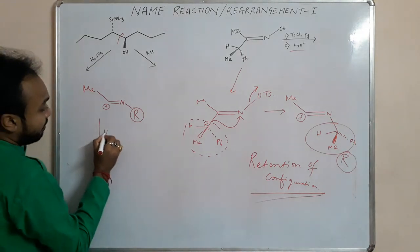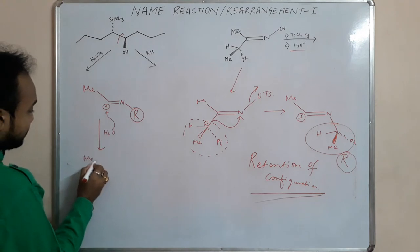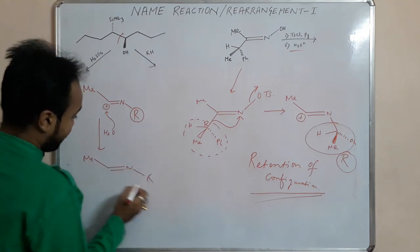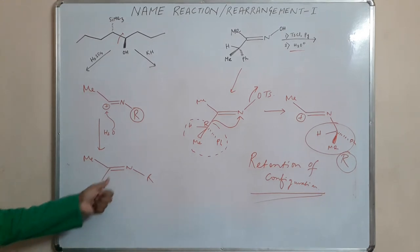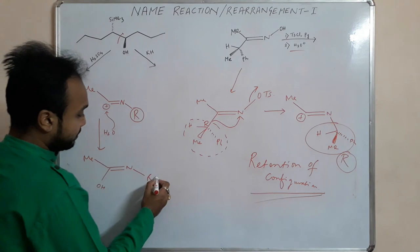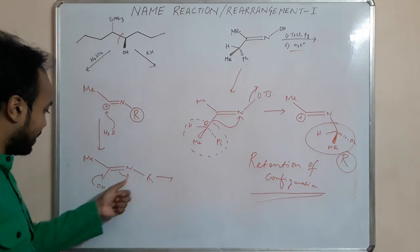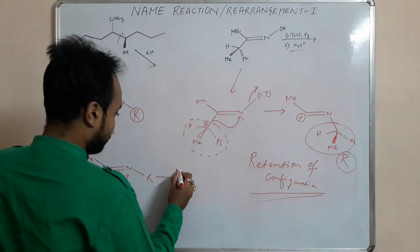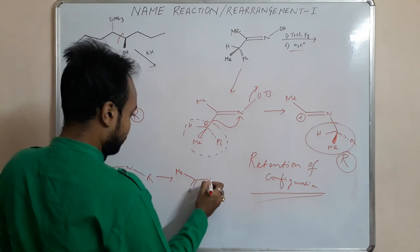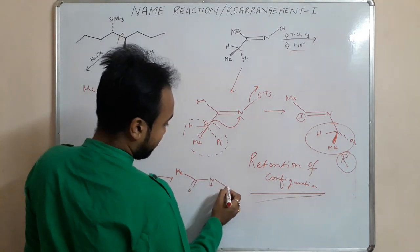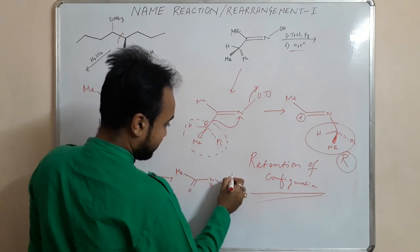Now we have hydrolysis condition, so we are adding water. Water adds here. It is basically forming this one. This R group is keto-enol tautomerism. It will abstract this proton, so we will basically get keto-enol tautomerism. It is R group, hydrogen, this is methyl.